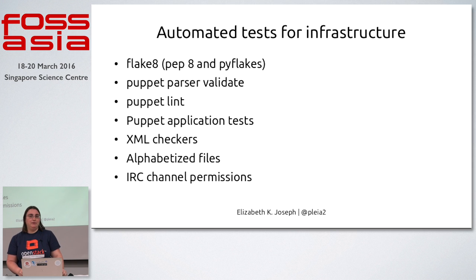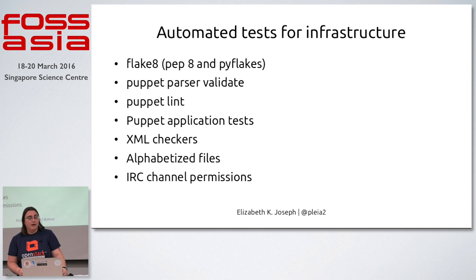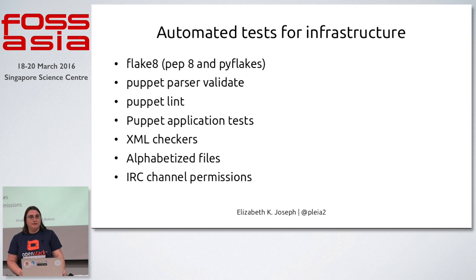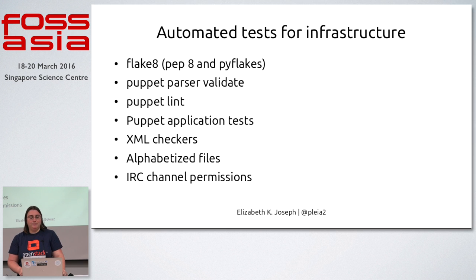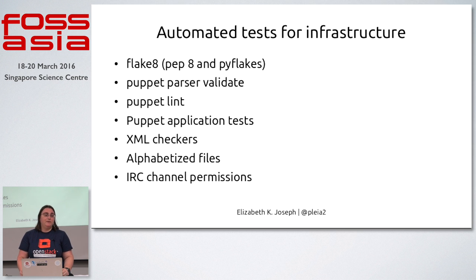OpenStack is all written in Python, so they have Python tests and integration tests. For infrastructure, things are a bit different. We use Flake8, which does PEP 8 and PyFlakes for Python syntax checking and unit test-type stuff. We use Puppet for our infrastructure — not because we love Puppet, it just happened to be the one we got running faster than Chef at the time. We run Puppet Parser Validate to validate syntax and Puppet Lint to make sure files look consistent, since we have people from many companies contributing.